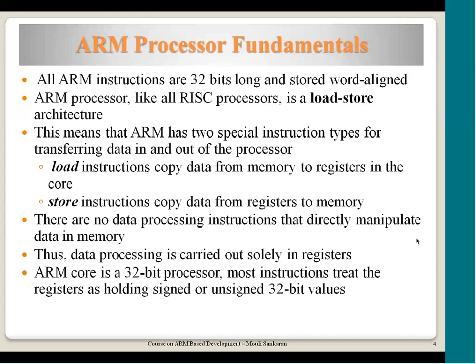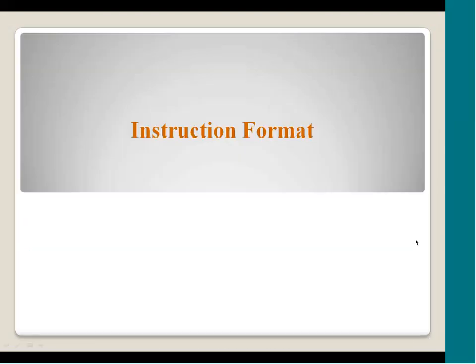All data processing instructions work only with 32-bit numbers, though the memory interface allows reading 8-bit or 16-bit data. When data enters a register it gets expanded to a 32-bit value, and any data processing instruction operates on it assuming it is a 32-bit value. All instruction decoding is done using hardware circuitry to make the decoding logic faster.